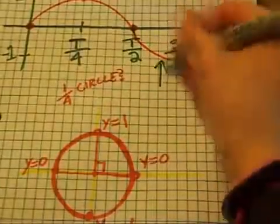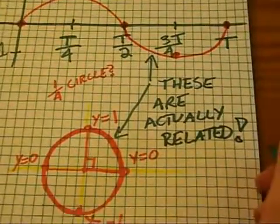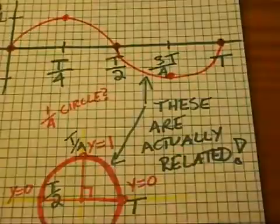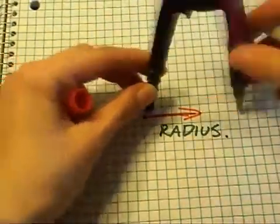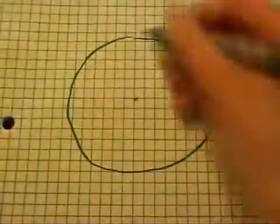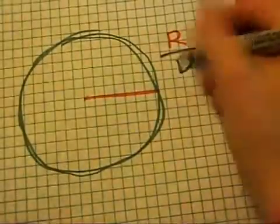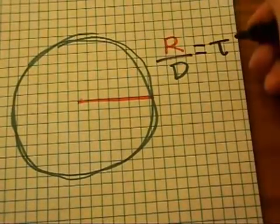Why? Because we don't make circles using a diameter — we make circles using a radius. The length of the radius is the fundamental thing that determines the circumference of a circle. So why would we define the circle constant as the ratio of the diameter to the circumference? Defining it by the ratio of the radius to the circumference makes much more sense, and that's how you get our lovely Tau.